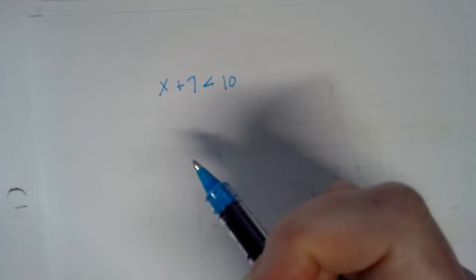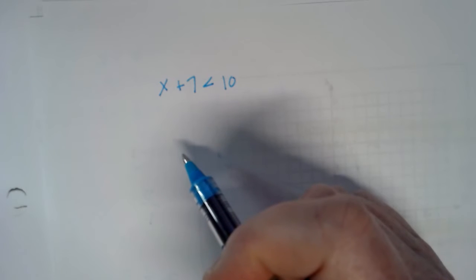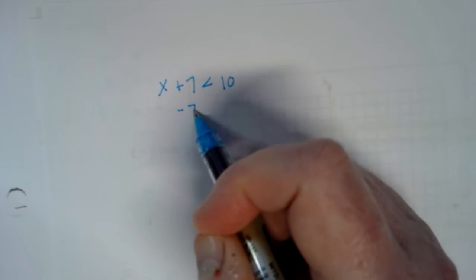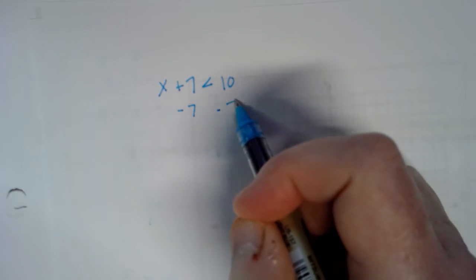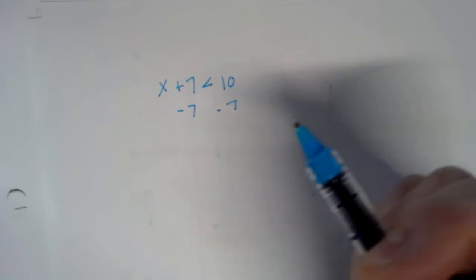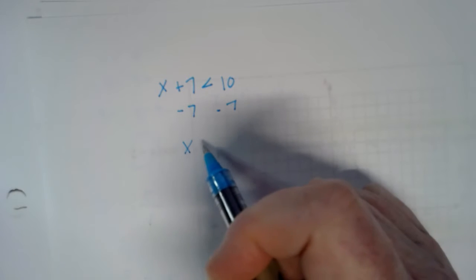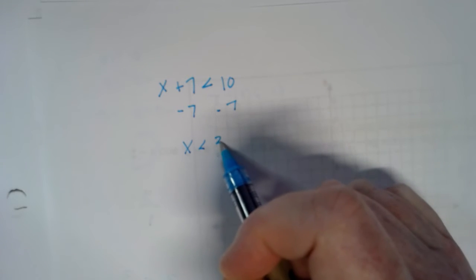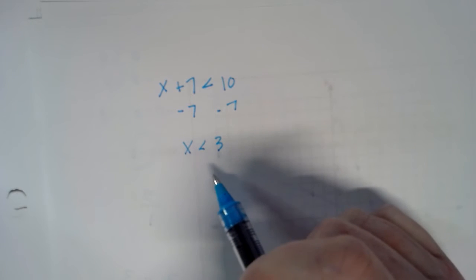In an algebraic equation, whether it's an equal sign or an inequality, you're going to isolate the x. So you need to get rid of this seven. Take away seven from this side, and you have to do the exact same thing on the other side. Take away seven from both sides — seven minus seven is zero, it's gone. You're left with x on this side, and 10 minus seven is three. So your inequality is x is less than three.